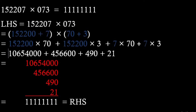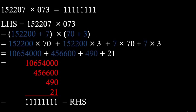The first multiplication gives 10654000, the second gives 456600, the third product is 490, and the last product is 21. Writing all the numbers one below the other as shown, we can see the extreme right digit is 1, the second column: 9 + 2 = 11 — again 1 with a carry — then 6 + 4 = 10, and 1 carry again 11. In this way we can find all ones, which is the expected right-hand side.